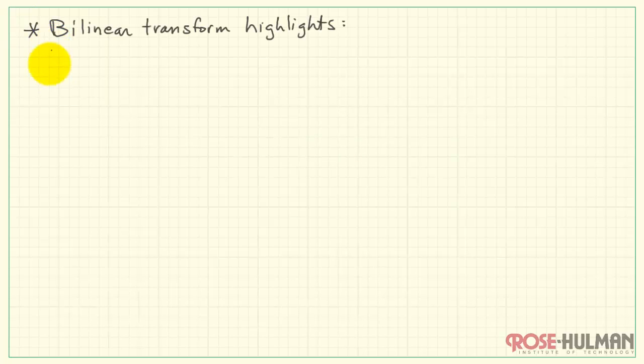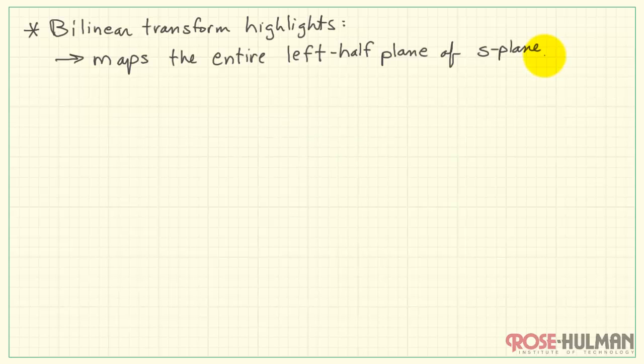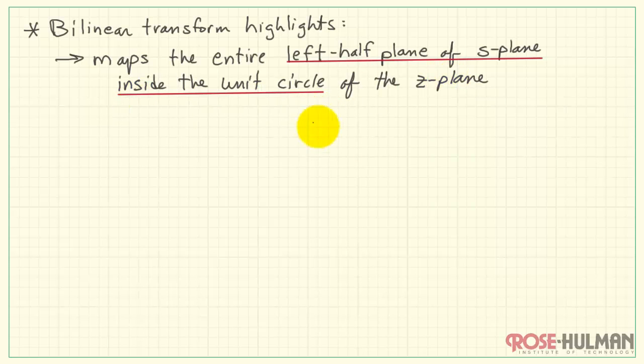To get started, let's take a look at some of the highlights of the bilinear transform. This transform maps the entire left half plane of the S-plane into the interior of the unit circle of the Z-plane.